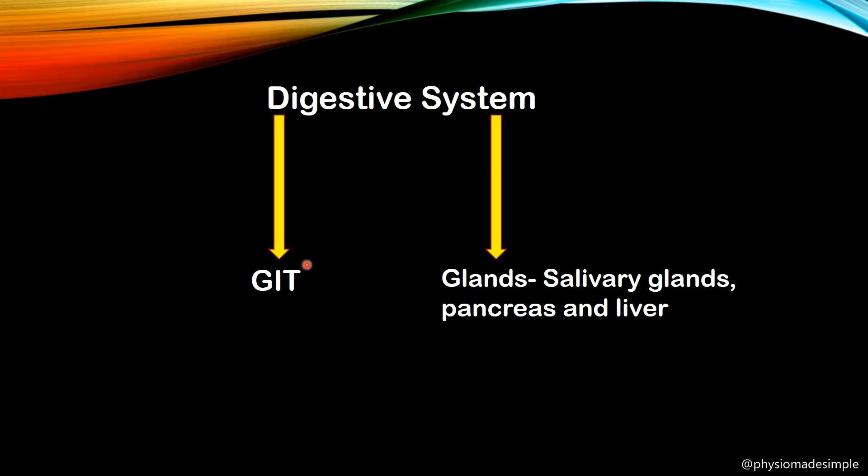There is a valve-like structure called sphincters. These sphincters are found associated with blood vessels and along the GIT, and they prevent the backflow of food and help channelize its movement.